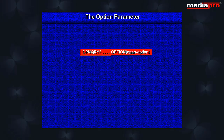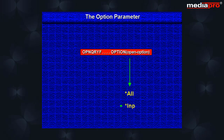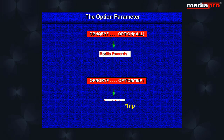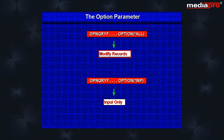The open query file also takes an option parameter. It can take two values: star all and star INP. When star all is specified, you are allowed to make modifications to the records, whereas with star INP, only input operations will be allowed.